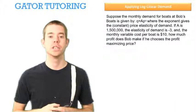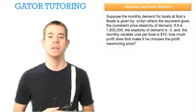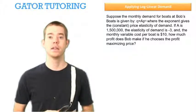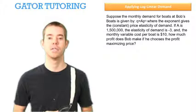Suppose the monthly demand for boats is given by Q equals A times P raised to the eta, where eta, the exponent, gives us the constant elasticity of demand.